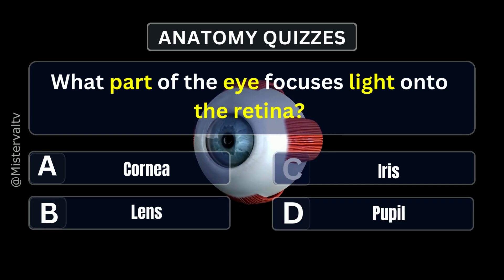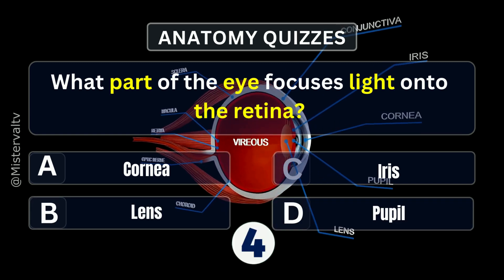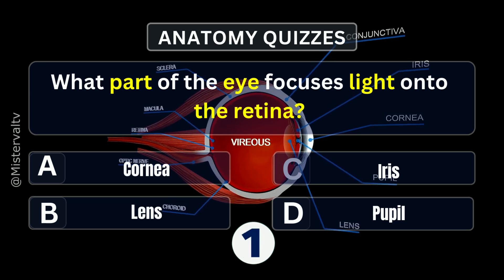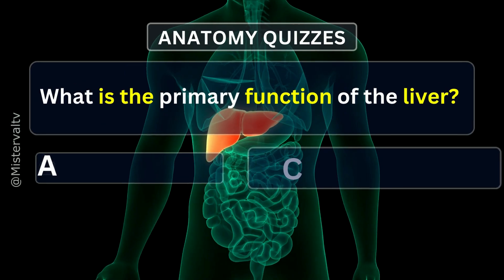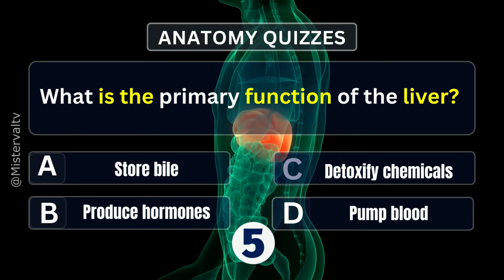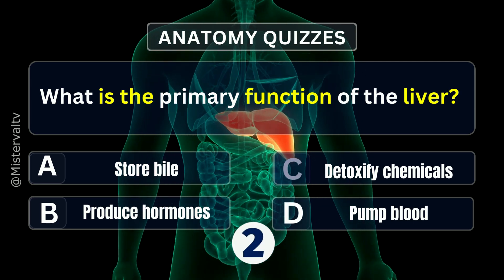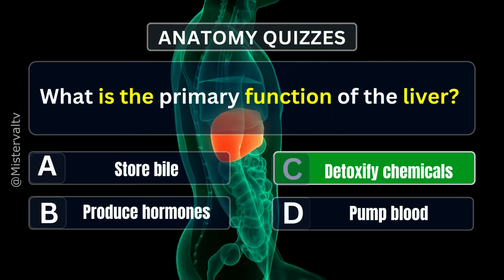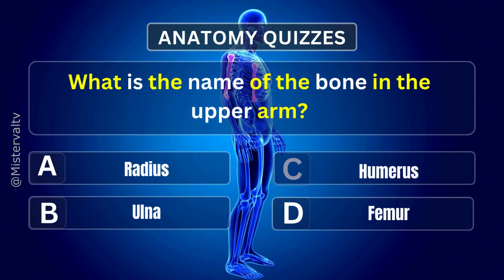What part of the eye focuses light onto the retina? Answer. B. Lens. What is the primary function of the liver? Answer. C. Detoxify chemicals.